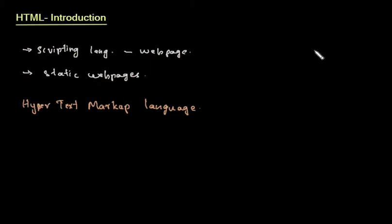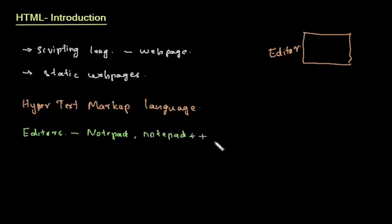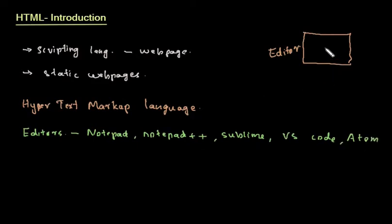If we want to create a Google page or a web page, we need to use an editor with HTML code. The editors we can use include Notepad, Notepad++, Sublime, VS Code, Atom, and so on.